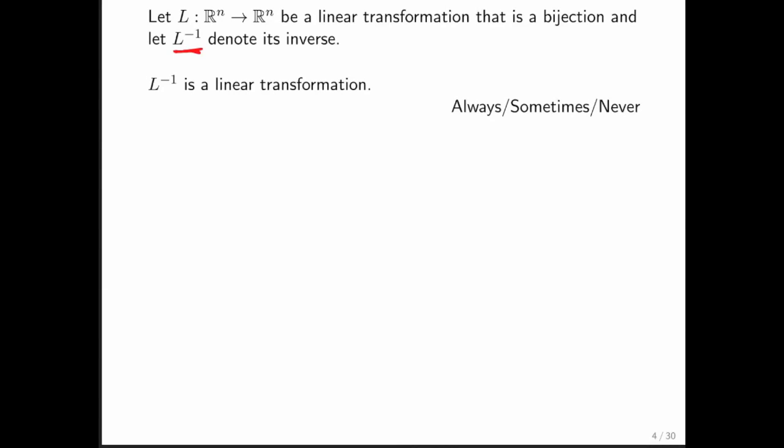Hopefully you went ahead and did the homework. If not, I'm going to explain it to you now. It turns out that L inverse is itself always a linear transformation. And how do we prove that? Well, we always start with arbitrary x and y and arbitrary alpha. x and y are vectors in Rn.